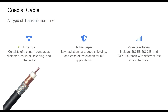Coaxial cable is a widely used transmission line in antenna systems, designed to carry RF signals with minimal loss and interference. It consists of a central conductor surrounded by an insulating layer, shielding to prevent external noise, and an outer protective jacket. Coaxial cables are popular due to their good shielding properties, ease of installation, and compatibility with most transceivers. However, different types of coaxial cable offer varying levels of loss and power handling, making selection critical for performance.